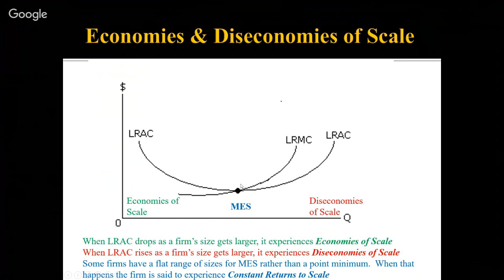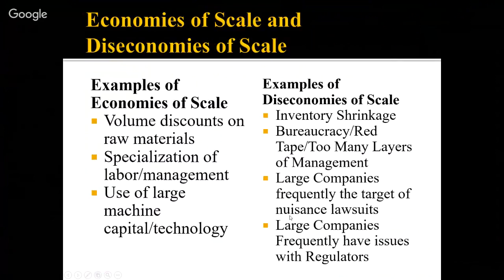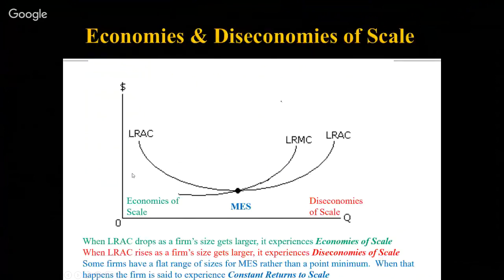Past the minimum efficient scale, as sizes get bigger, the average total cost per unit starts rising again. That's where inefficiencies set in — we call those diseconomies of scale. Have you ever had to deal with a business where you had to go through so many departments just to get a simple task fixed for customer service? That's what you call bureaucracy or red tape — too many layers of management.